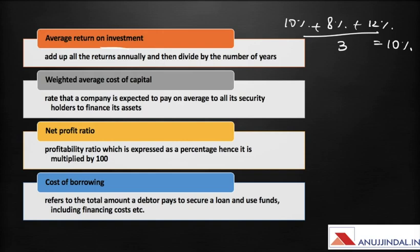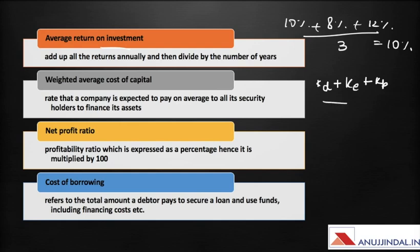Then we have weighted average cost of capital. A company has to borrow funds or it may use its own funds, and there is a cost associated with each. If it borrows debt, it has to pay interest — we denote KD as the cost of debentures or borrowings. Then we have the cost of equity and the cost of preference shares. To find the weighted average cost of capital, we associate weights based on how much of each fund is used in the capital structure. This is the minimum rate of return a company must earn to satisfy its investors.